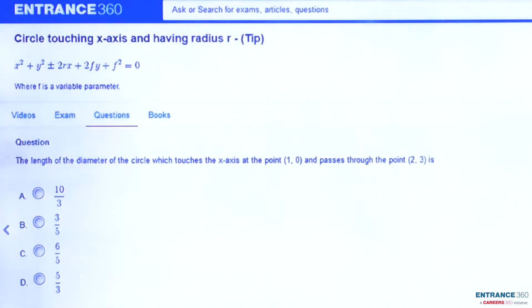Then you can see the question. The length of the diameter of the circle which touches the x-axis at the point (1,0) and passes through the point (2,3). Then we have to find the length of the diameter.